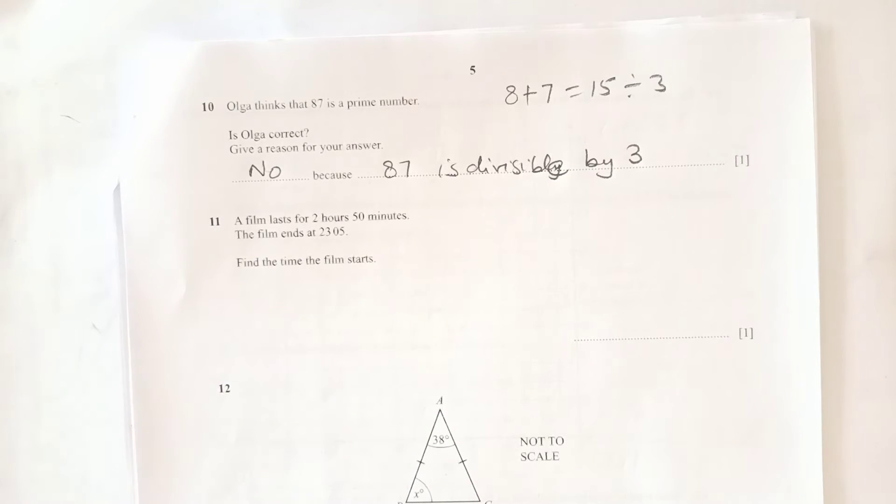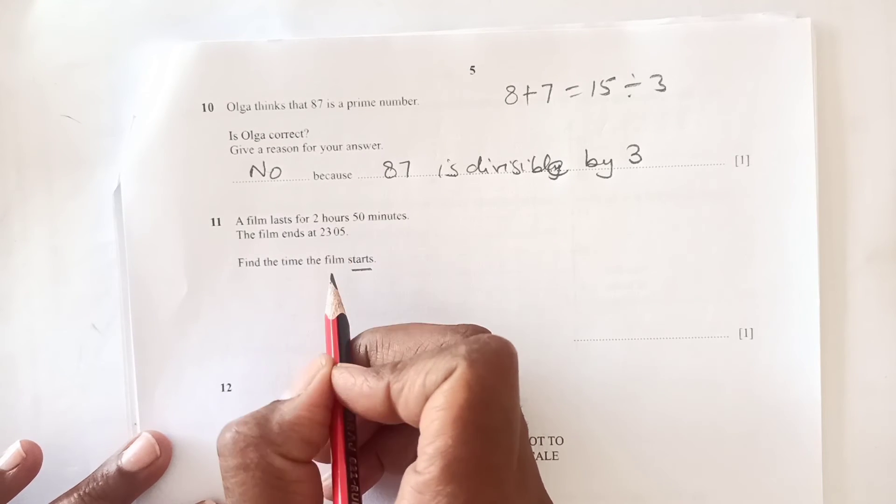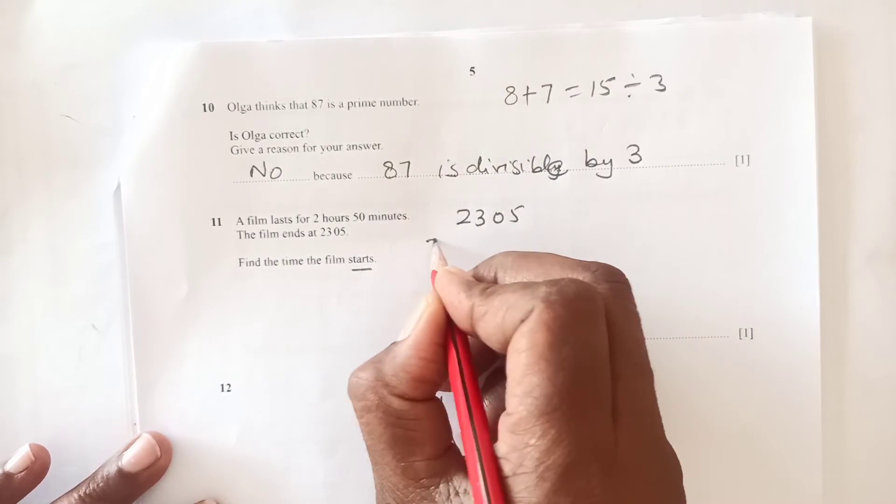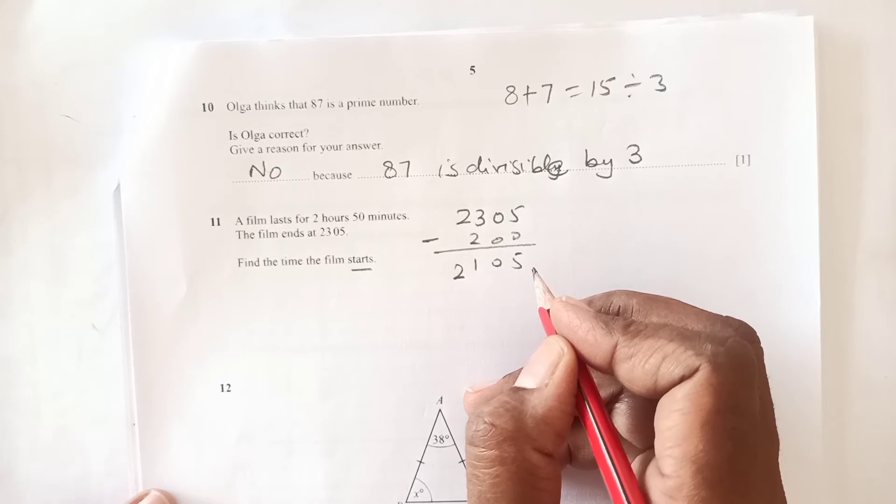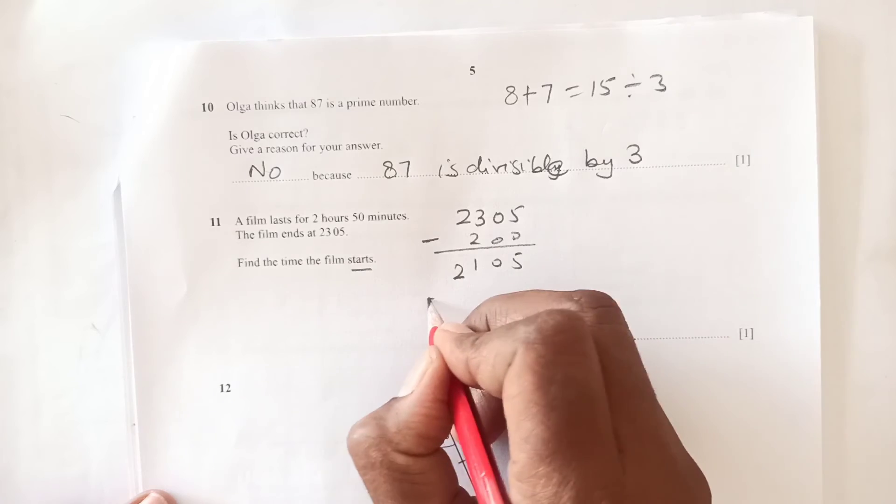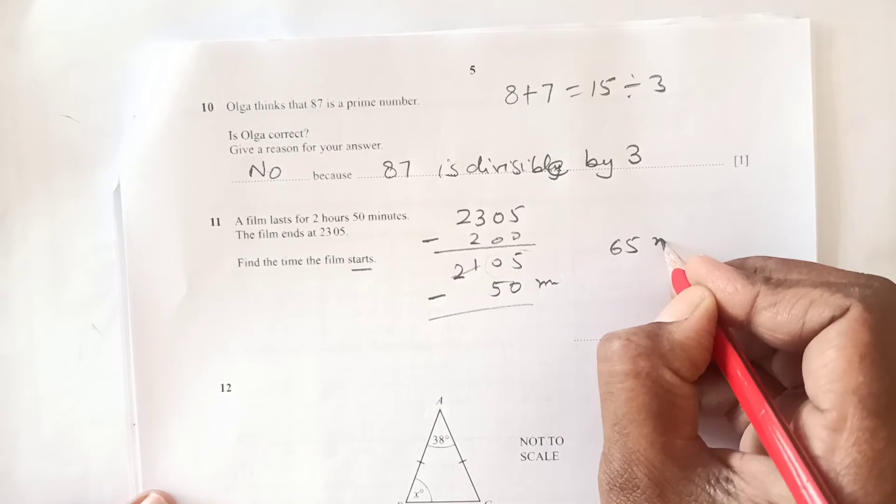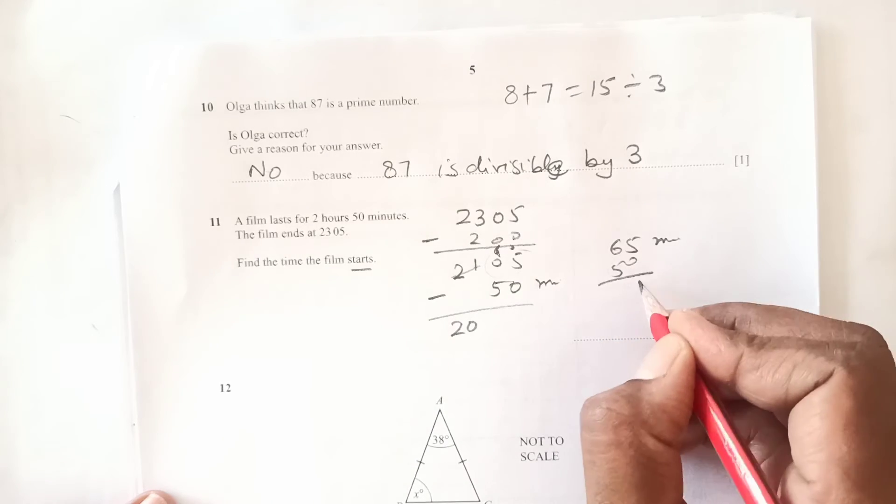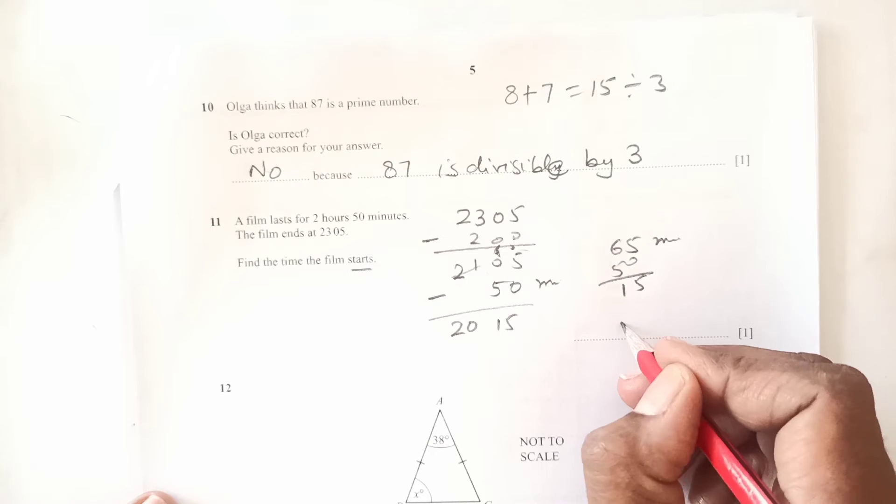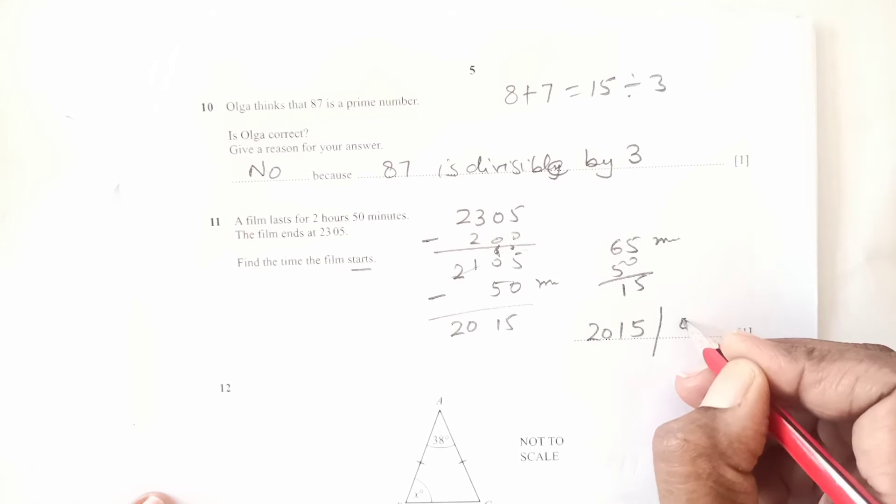Number 11: a film lasts 2 hours and 50 minutes. The film ends at 23:05. Find the time when it starts. We subtract 2 hours from 23:05, so this is going to be 21:05. Now we subtract 50 more minutes. One hour will make this 65 minutes, this becomes 20 here, 65 minus 50 is 15. So 20:15 is the time when the film starts, or you can say 8:15 PM.